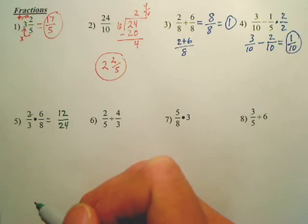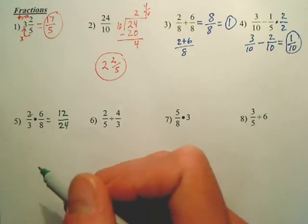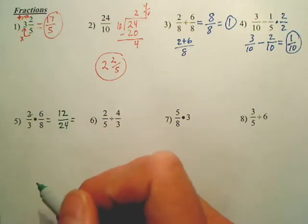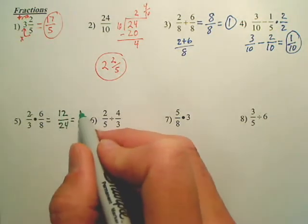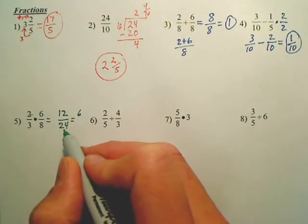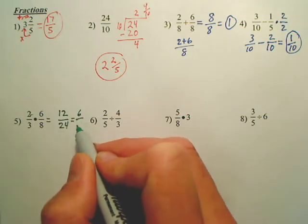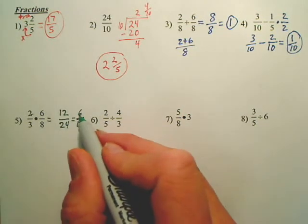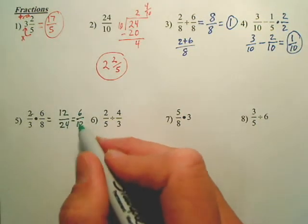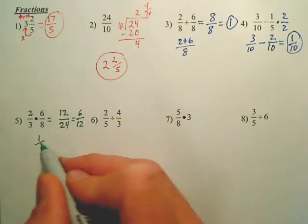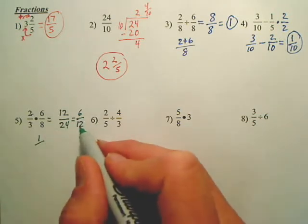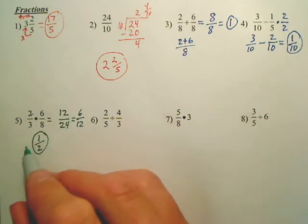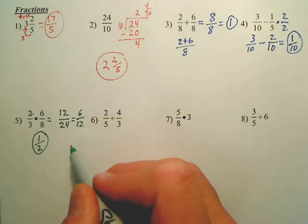And then we look at that and go, okay, what goes into both those? Well, let's do 2. How many times does 2 go into 12? How many times does 2 go into 24? Can that be reduced? I can keep going. Wait, how about 6? Does 6 go into both those? 6 goes into 6 once. 6 goes into 12 twice. That can't be reduced anymore. So I multiplied straight across and I started reducing.